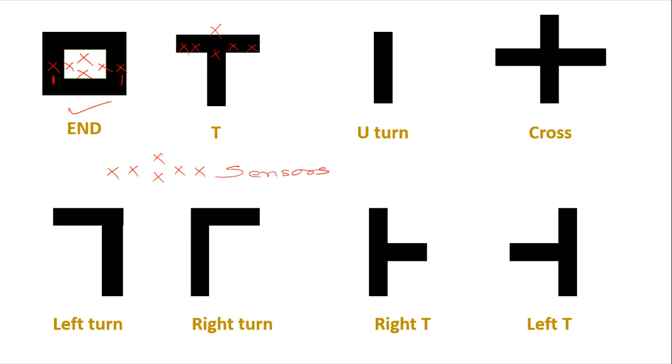This is how a T can be recognized. Similarly, for a U-turn, we are going to either get everything on white, which is meaning that we need to take a U-turn here. Similarly for a cross, the things are very simple. Every sensor is going to give you a logic one reading, so that's how a cross is identified.